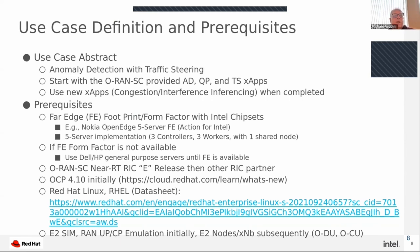Some of the prerequisites for the testing include a far edge footprint, for example using a Nokia open edge form factor — a five-server form factor that can be deployed just about anywhere, great for mobile applications. If a far edge footprint is not available, we'll start with a general purpose machine like an HP or Dell. We intend to use the O-RAN SC release initially, OCP 4.10, and RHEL, starting in the lab with E2SIM, eventually migrating to actual OCU/DU with actual E2 clients.